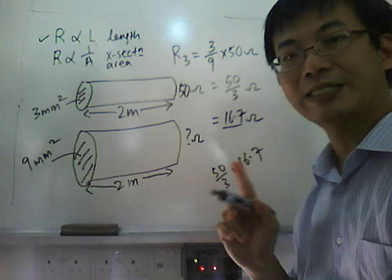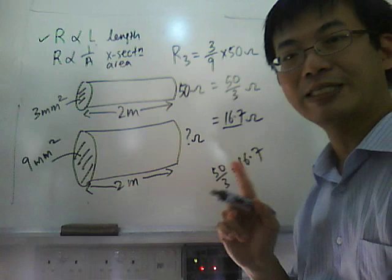In summary, when the area becomes bigger, the resistance becomes smaller. In this case, the area multiplied by 3, the resistance has to divide by 3. Today we have covered this revision. Thank you.